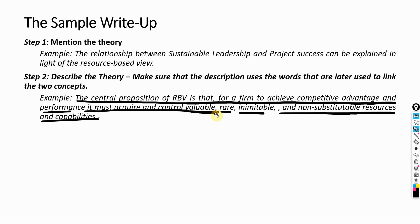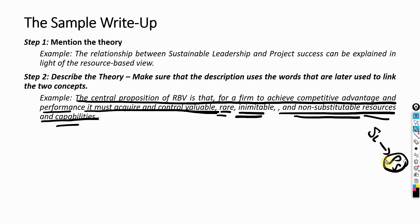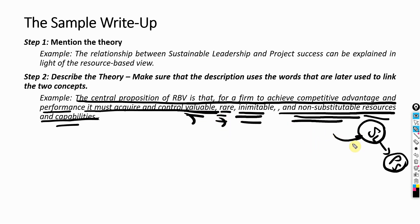These are the key characteristics: valuable, rare, inimitable, and non-substitutable resources and capabilities. What I am going to do is find an argument showing that sustainable leadership is a valuable, rare, inimitable, or non-substitutable resource or capability — since project success is the organizational outcome. Not all of these are required; maybe just one or two. If I find an argument that sustainable leadership is valuable, that is more than enough to say that something valuable like sustainable leadership can help improve an organizational outcome like project success. That is how you use Resource-Based View to link the two concepts.